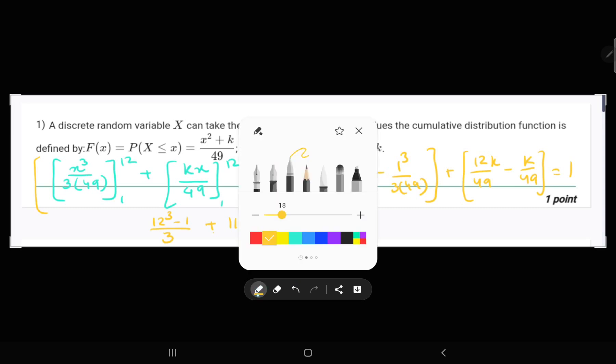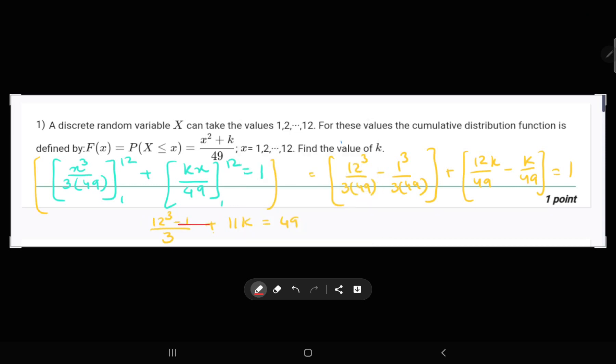After using calculator, we will get this term, the upper one, will be 1727, and dividing this term with 3 will get 575.67.